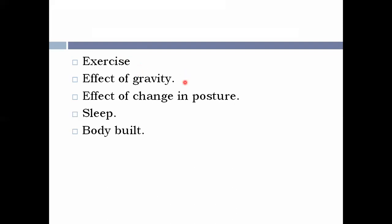The effect of gravity can be divided into two parts. We have a heart, with certain blood vessels above the heart and certain below. The blood vessels above the heart — because of gravity — have decreased blood pressure due to venous pooling.